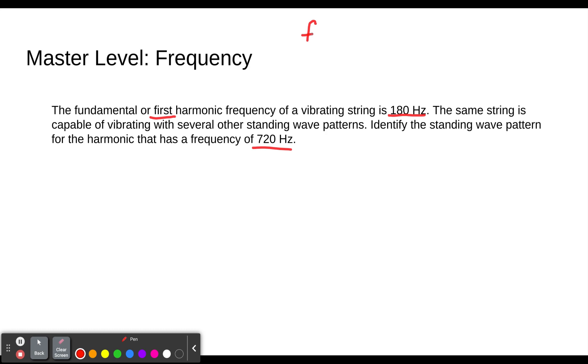So we think back to our equation here, f sub n equals n times f sub 1. In this case, we have been given our first harmonic, here it is, our first frequency of our first harmonic, and our nth harmonic right here. So if we take this and we just rearrange for n, that means dividing both sides by the first frequency of the first harmonic. It's going to cancel out the frequency of the first harmonic and we get n equals the frequency of the nth harmonic divided by the frequency of the first harmonic. Which for this problem is 720 hertz is the nth harmonic, and f1 was 180 hertz.